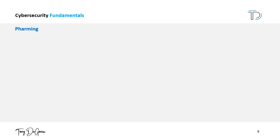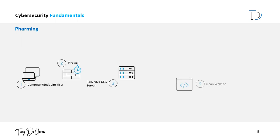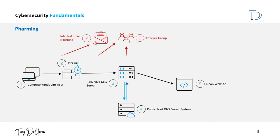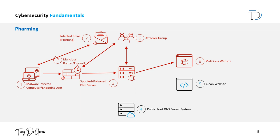Attack vector number two is pharming. Pharming is a type of cyber attack that targets the DNS infrastructure. The goal of the attack is to redirect users from legitimate websites to malicious or compromised websites by changing the DNS settings on their computer or router. Pharming attacks can be executed in several ways.